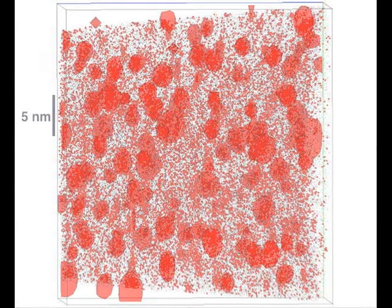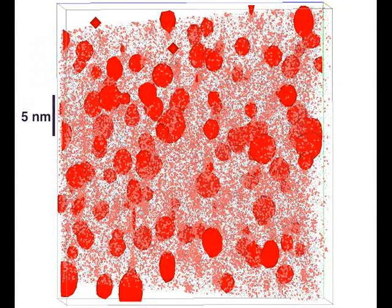The larger atoms are copper, shown in red. They're clustered. We can draw surfaces around those to show where these precipitates of copper show up.